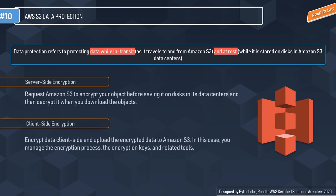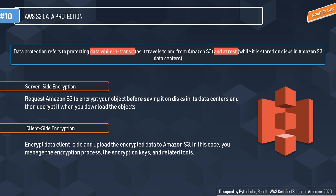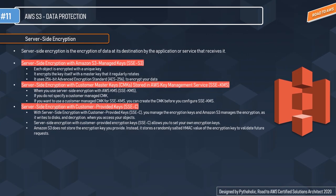The first option is server-side encryption, where you request Amazon S3 to encrypt your objects before saving them on its data center disks and then decrypt them when you download the object. The second option is client-side encryption, where you encrypt data client-side and upload the encrypted data to Amazon S3. In client-side encryption, you manage the encryption process, the encryption keys, and the related tools. The key difference: server-side encryption handles data residing on data centers, while client-side encryption has you encrypt before storing on S3.